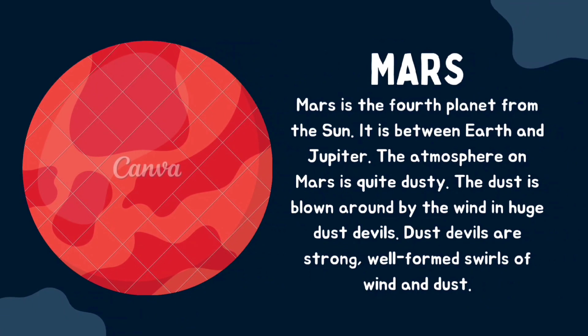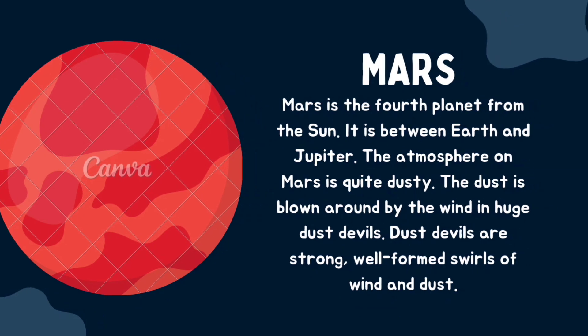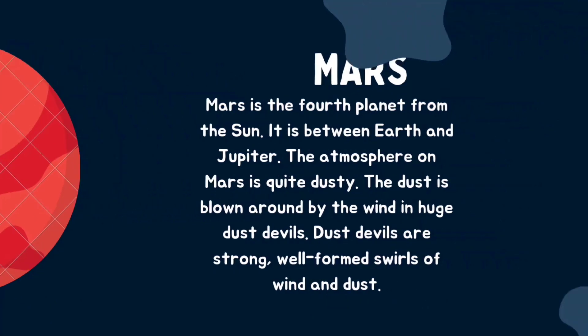Now we are moving to the fourth planet, Mars. Mars is the fourth planet from the sun, located between Earth and Jupiter. The atmosphere on Mars is quite dusty. The dust is blown around by the wind in huge dust devils. Dust devils are strong, well-formed spirals of wind and dust.